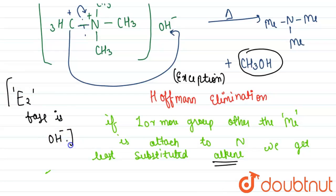And we get methanol in this case because all the groups were methyl. If we change only one methyl we will get an alkene.